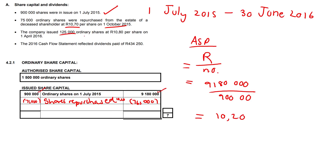The company issued 125,000 shares at R10.80. Fairly easy calculation — 125,000 shares issued at R10.80. Plug that into your calculator and you get 1,350,000.